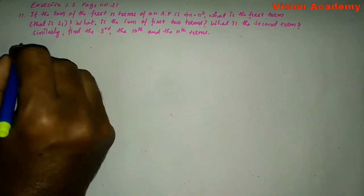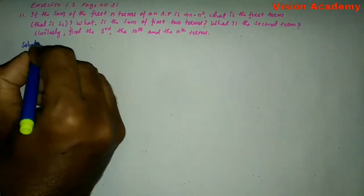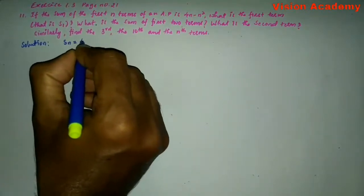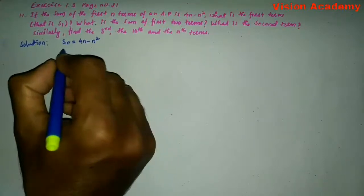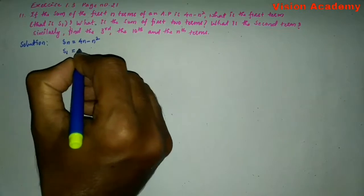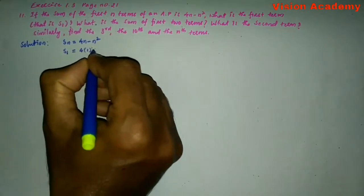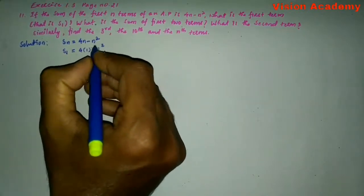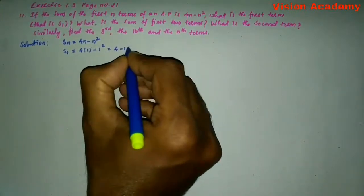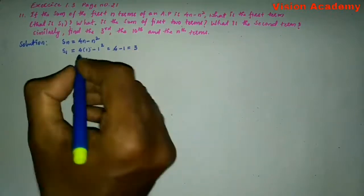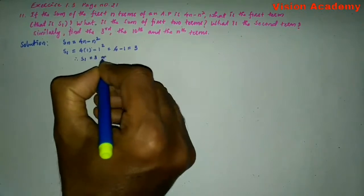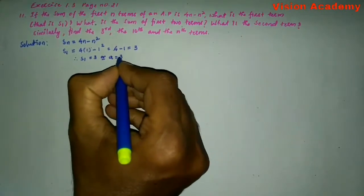Now let us find the solution for the given problem. Here, given Sn is equal to 4n minus n square. Substitute n equal to 1. S1 is equal to 4 into 1 minus 1 square. This gives us 4 minus 1 square is 1, so 4 minus 1 is 3. Therefore, S1 is equal to 3, or the first term A is equal to 3.